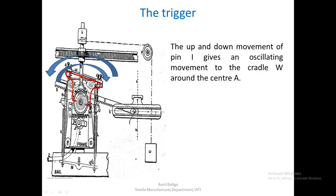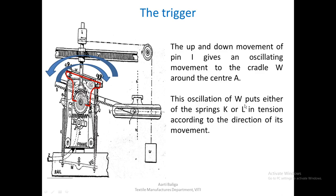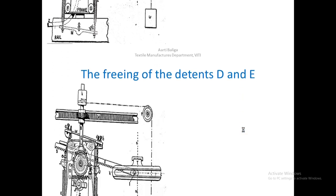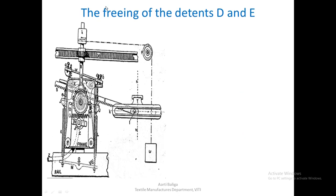This happens as the bobbin rail is moving up and down. The oscillation of W puts either of the springs K or L in tension according to the direction of its motion. The movement of W will put K and L into tension as per the movement, which we shall shortly see.